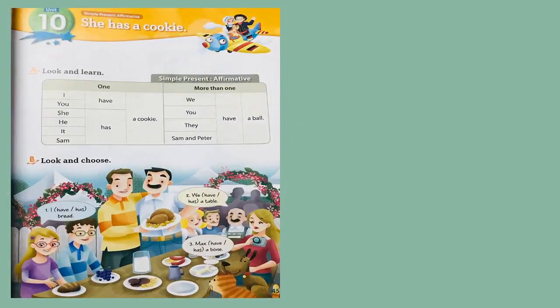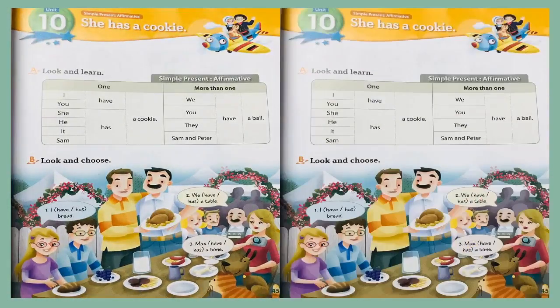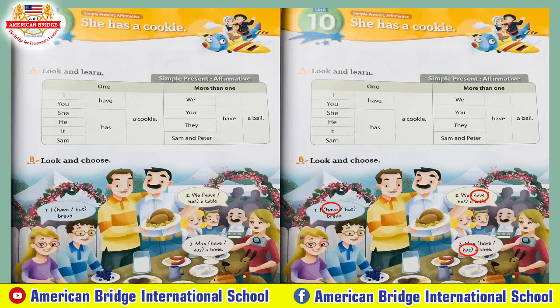I know you've finished already, so let's check your answers. Number one: 'I have' or 'I has'? Good — 'I have'. I have bread. Number two: 'We have' or 'we has'? Good — 'we have'. We have a table. Number three: 'Make have' or 'make has'? Good — 'make has'. Make has a bone. Here are our answers for page 45, exercise B.